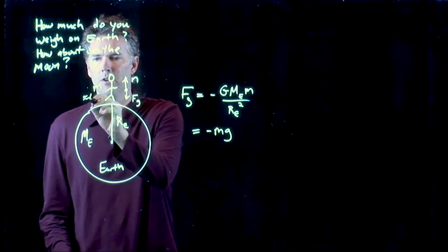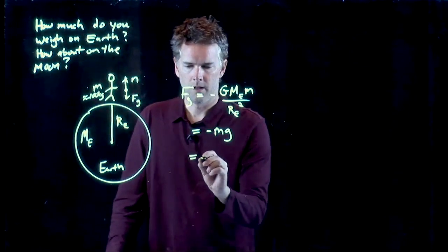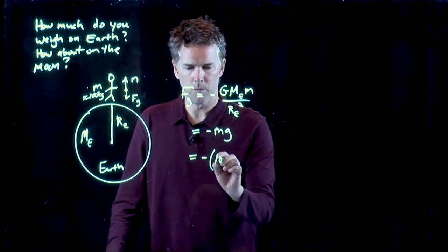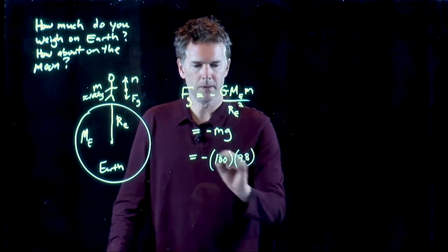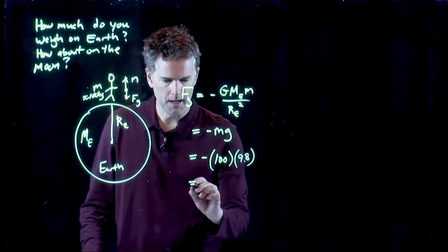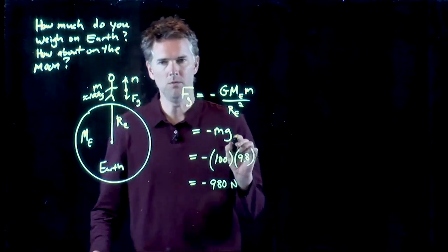So let's say that the mass of you is 100 kilograms. Let's see what this number is then. We get 100 kilograms times 9.8 meters per second squared, all in SI units. We get 980 Newtons.